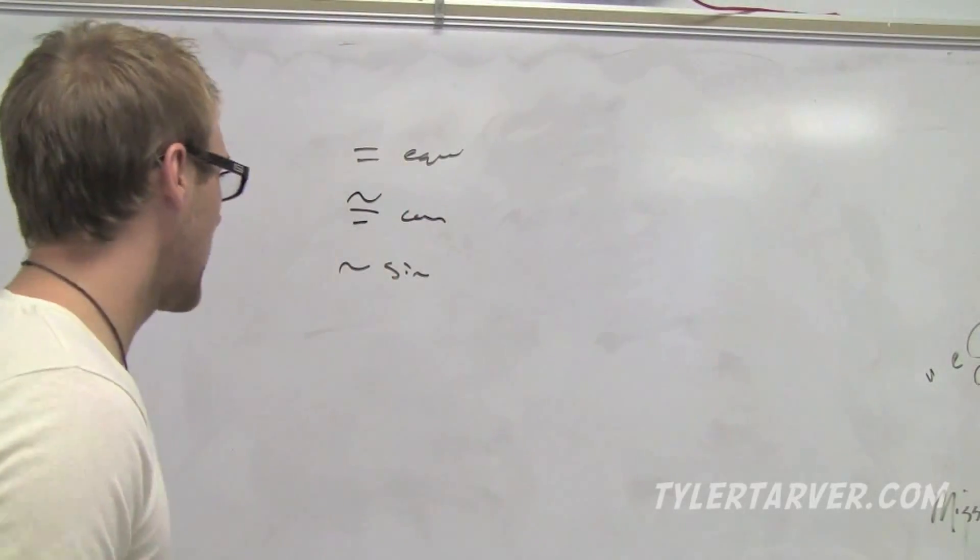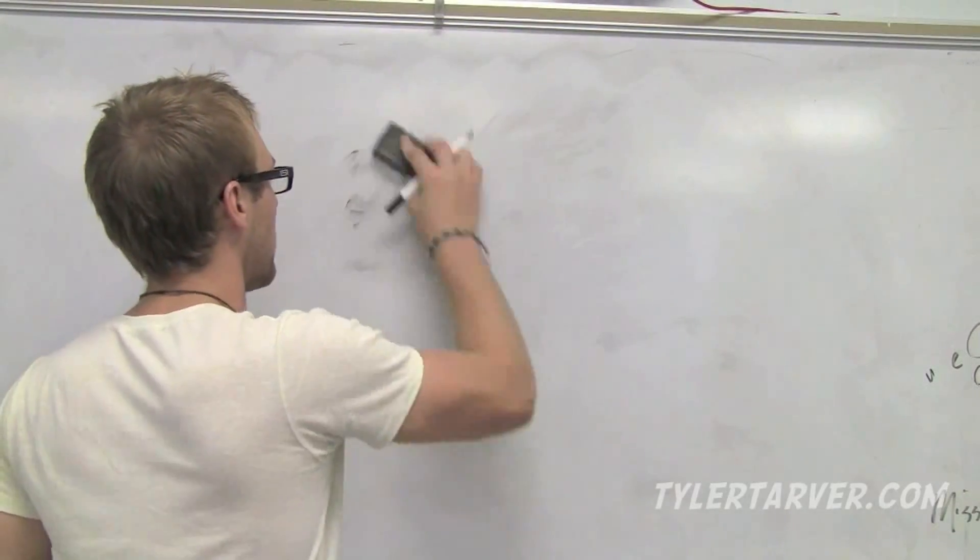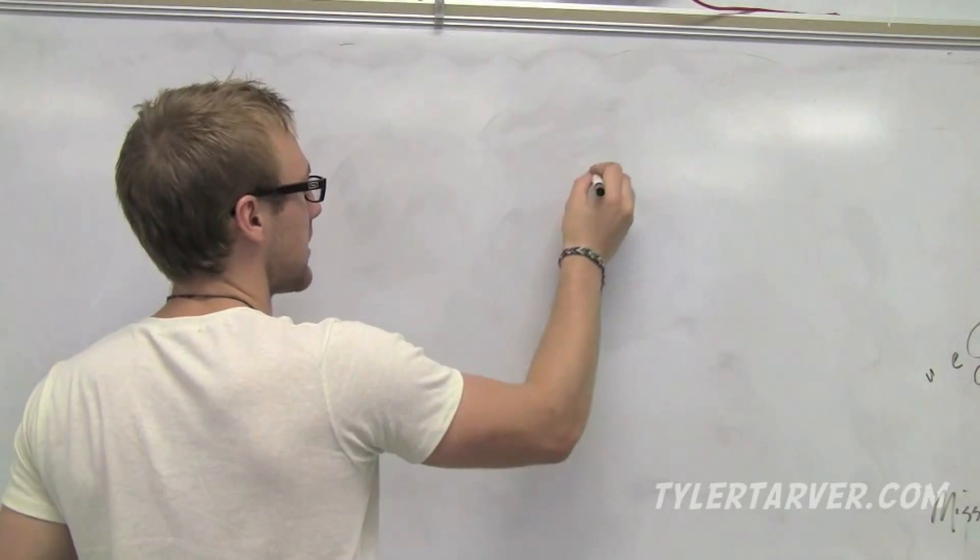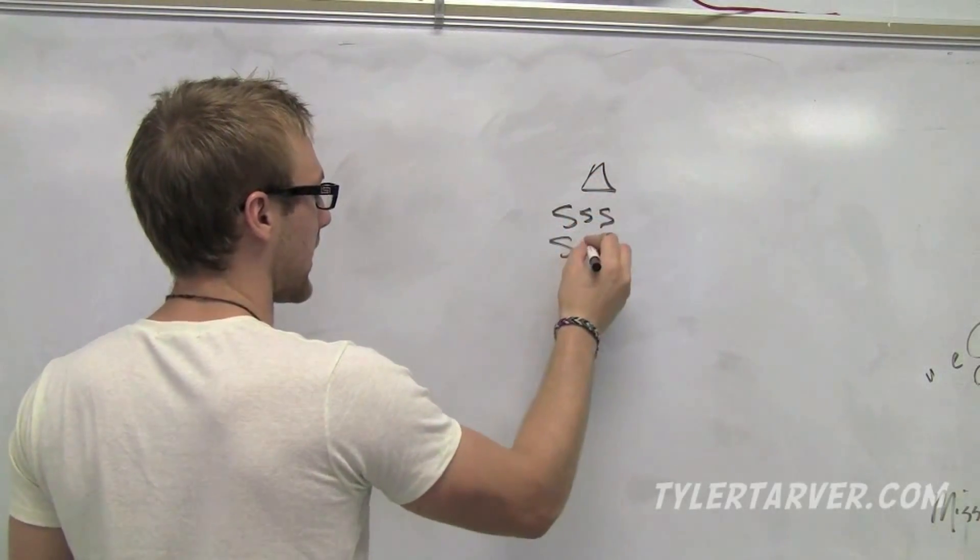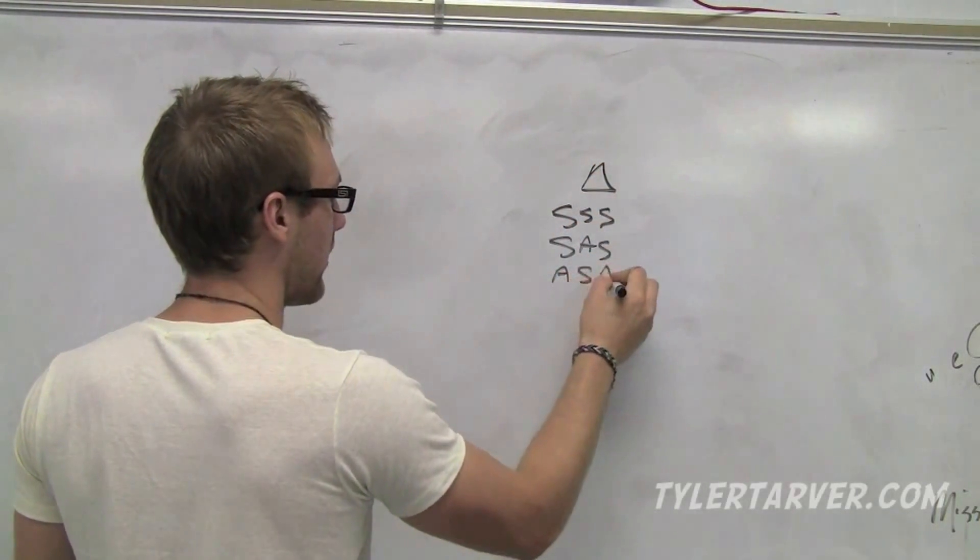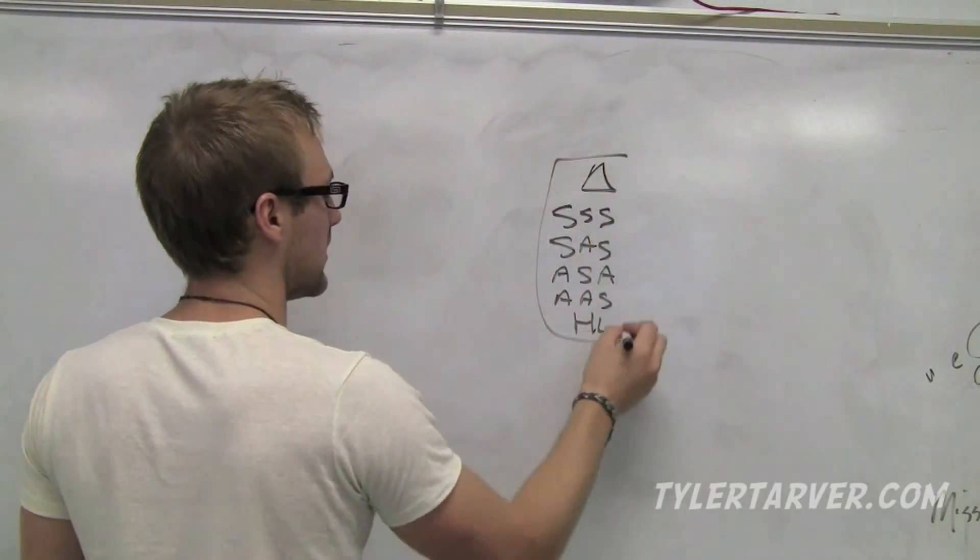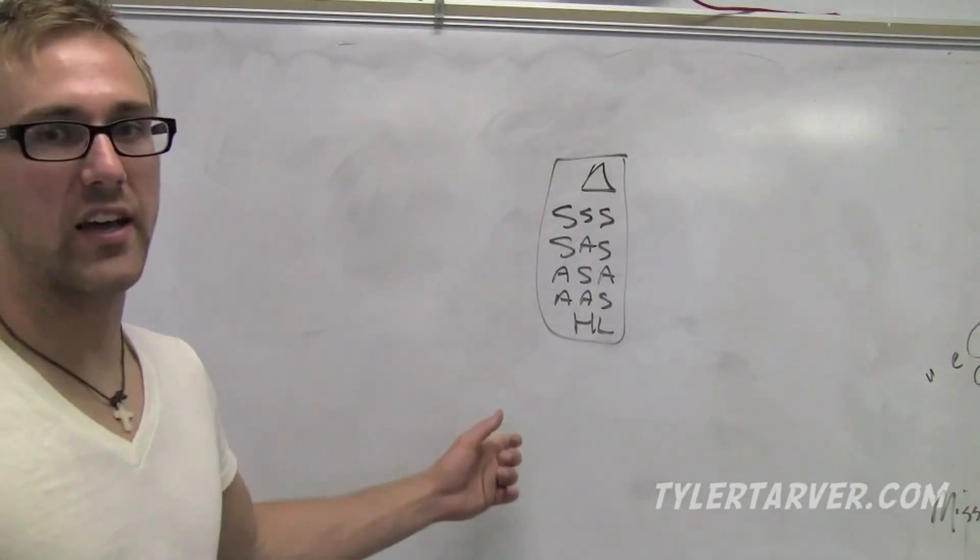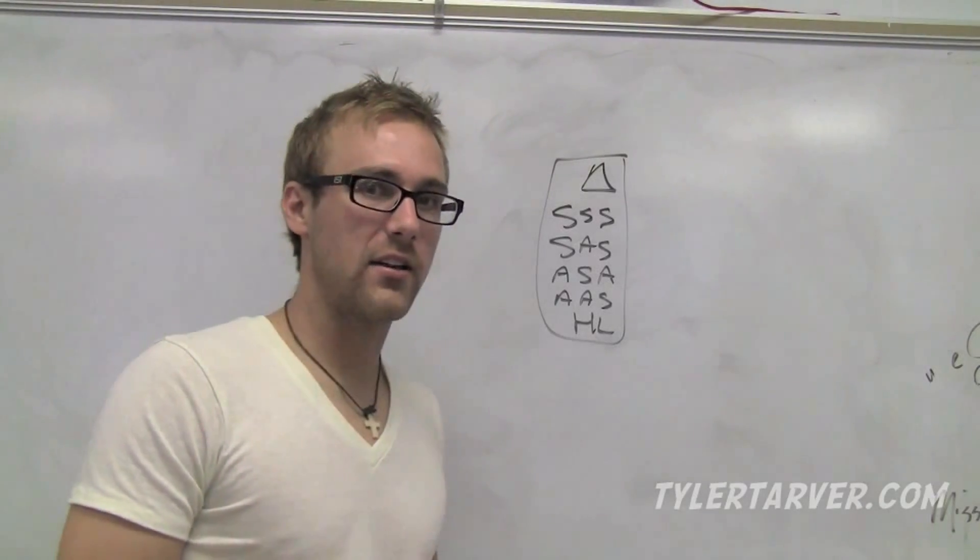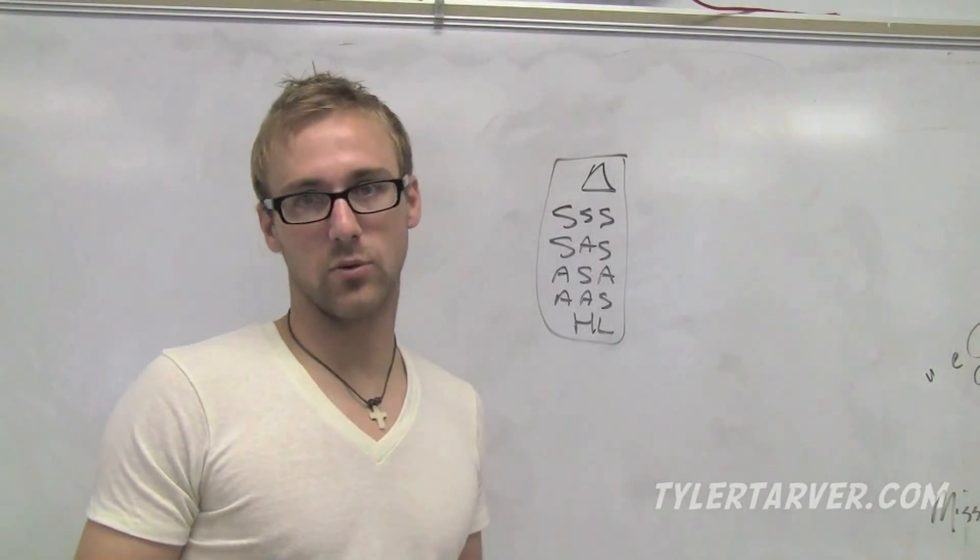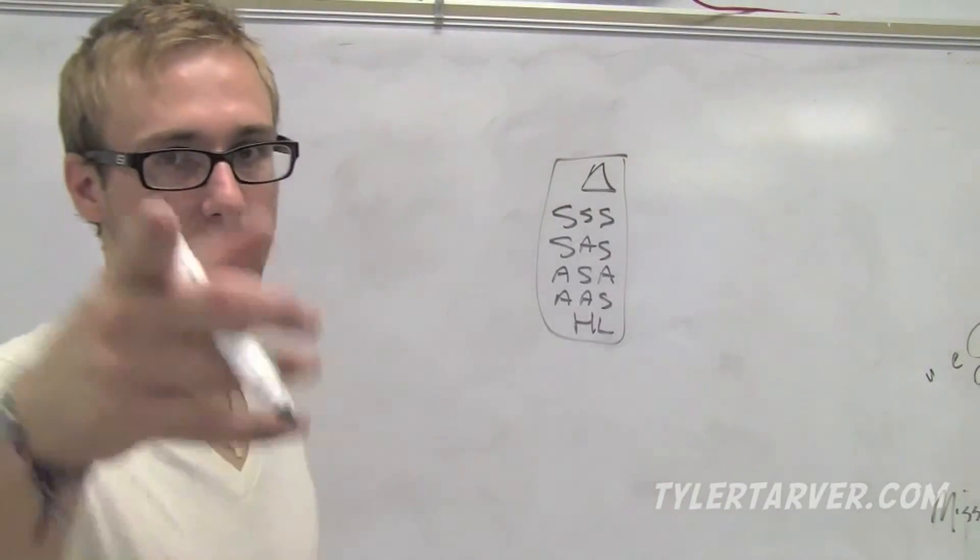When we talk about triangle congruence, we're talking about two triangles being the exact same measure. There was side-side-side, side-angle-side, angle-side-angle, angle-angle-side, and HL. Five things. Pretty much everything you can think of except for AAA and the cuss word, and the cuss word backwards.